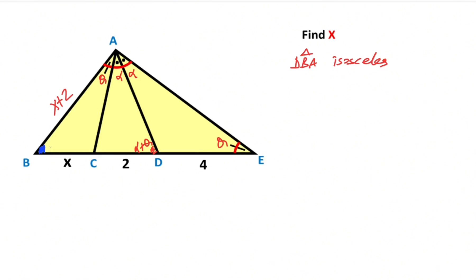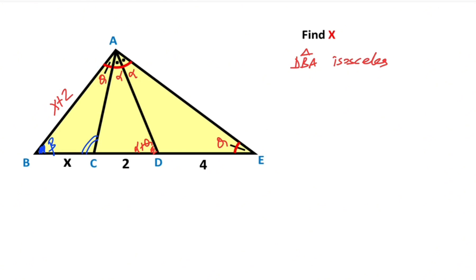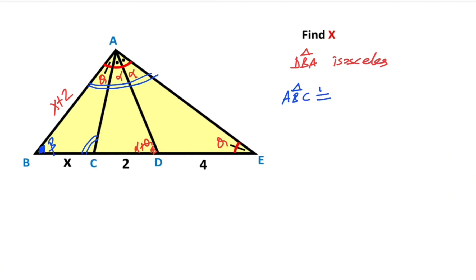Then, let's call this angle BIDA. If you focus on this triangle, this triangle has angle BIDA, theta, and this angle — let's call it the double line angle. Now if you focus on the biggest triangle, the biggest triangle has the same angles. So angle BAE must be equal to the double line angle. That means triangle ABC and triangle EBA are similar.